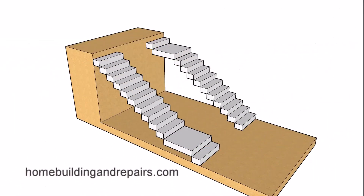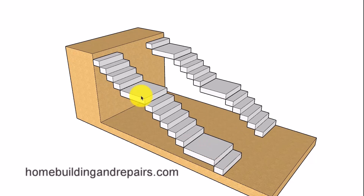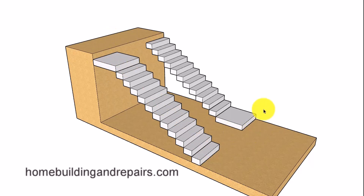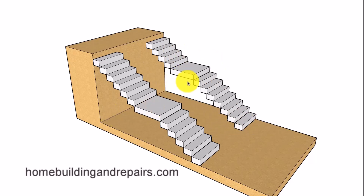Here is another problem one of our viewers had: they were wondering where you can locate a stair landing and how many stair landings you can put in a stairway. A stair landing can be located anywhere in the stairway — for example, one step away from the top or one step away from the bottom, or you can have a couple of them. You don't need to stick to one model. You could have a landing one step from the top, then four steps down to another landing, or one step up to a landing and five steps up to another, or three steps to a landing, two steps to another, and so on.